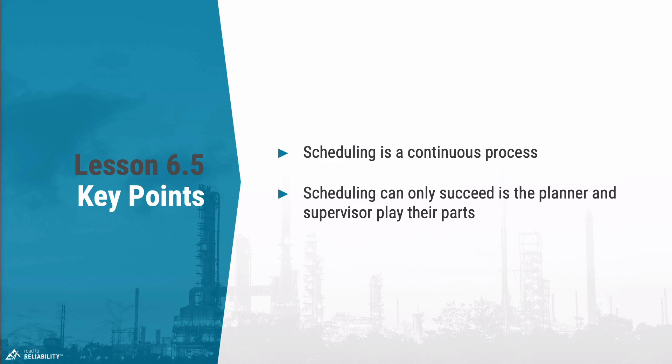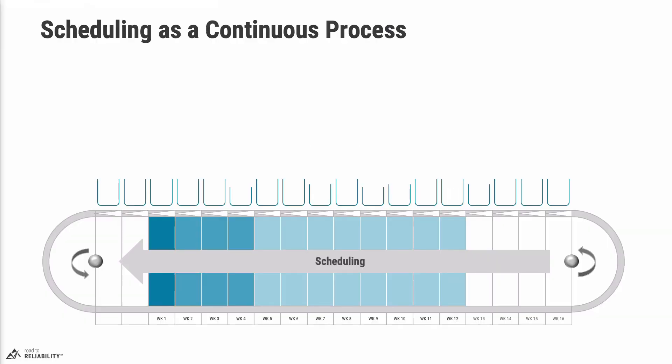It also shows how it combines with developing a draft schedule for future weeks. The second key point is that the scheduling process can only work if the maintenance supervisor and the maintenance planner play their parts in the process, and the conveyor belt analogy will make this very clear.